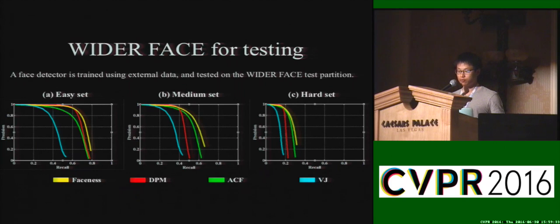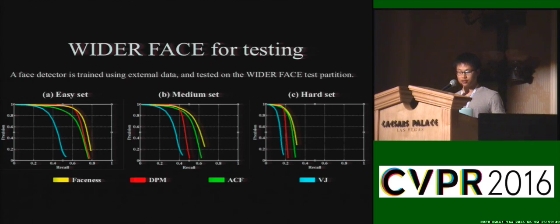Here we show the precision and recall curves. When transitioning from the easy set to the hard set, we observe a trend: all face detectors suffer a fierce drop in performance. For the easy set, none of the methods achieved average precision higher than 75%. The hard set is extremely challenging — performance quickly decreases with average precision below 30%.